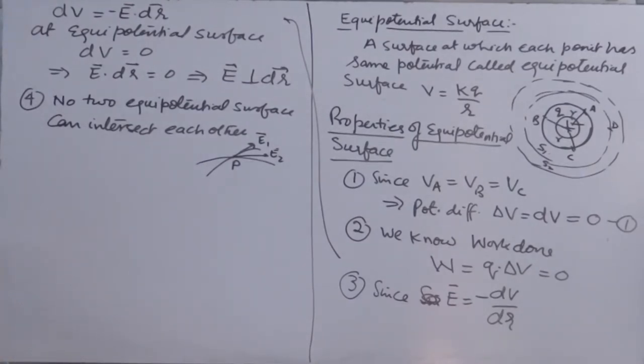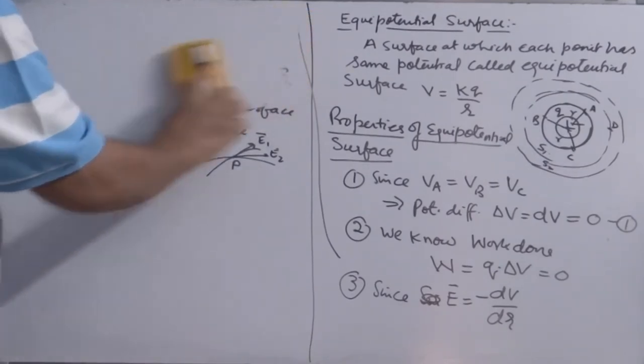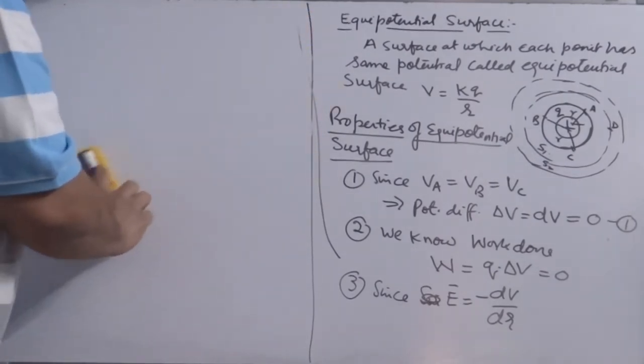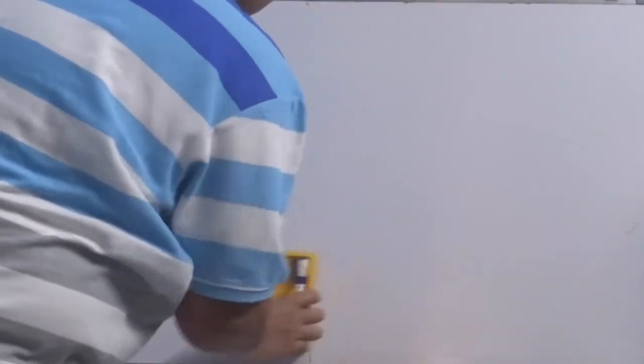Equipotential surface appears crowded in the region of strong electric field. Next property. Equipotential surfaces appear crowded in a strong electric field region. Now, you can see. See the different shapes of the equipotential surfaces obtained due to a single point charge or system of point charge.